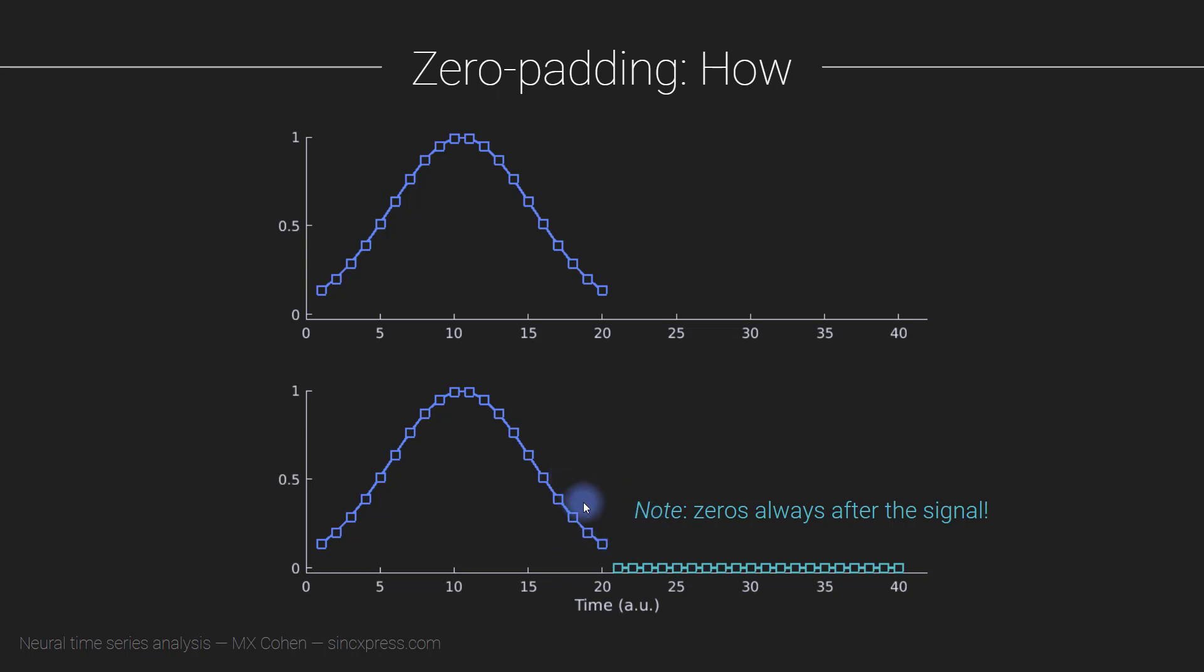When we take the FFT transform of this signal, it's going to have twice the frequency resolution as this signal. We are still going to start with zero Hertz and go up to the same Nyquist frequency because we're not changing the sampling rate, we are just adding more data points. Here is the important note: when you zero pad, you always add the zeros after the signal. You don't add them before the signal, you don't intersperse the signal with zeros. You always put the zeros after the signal.